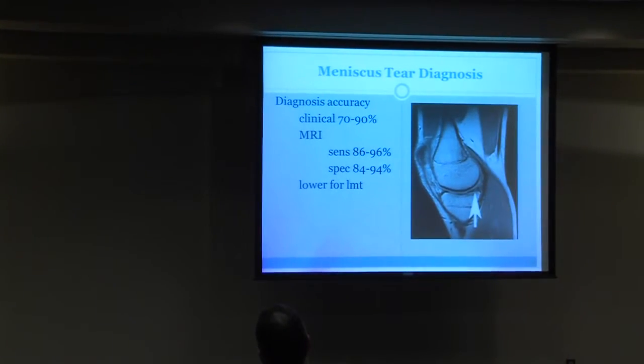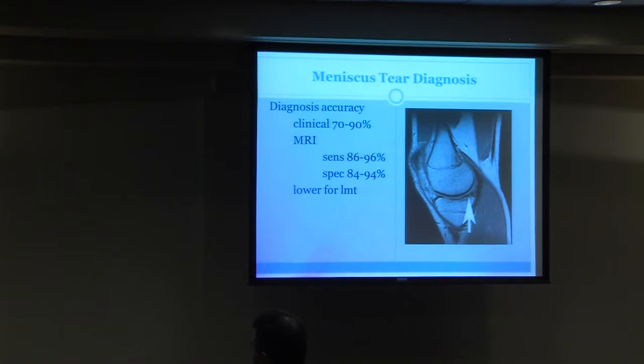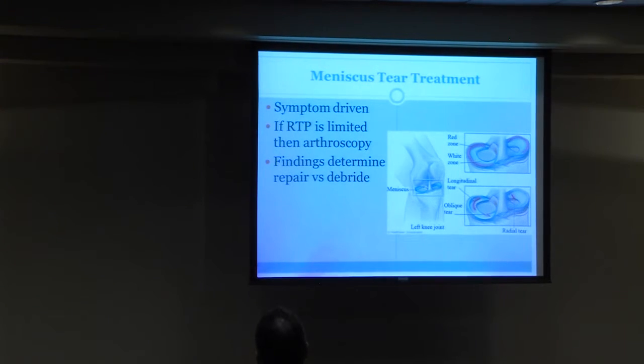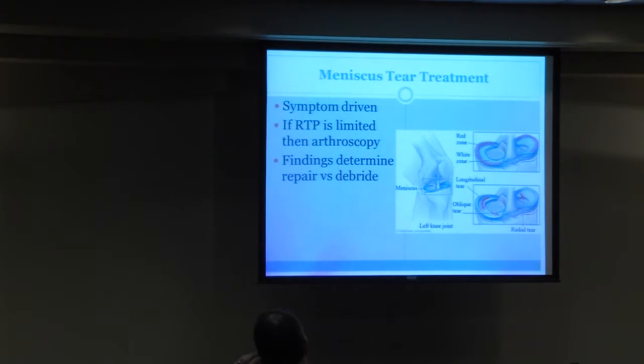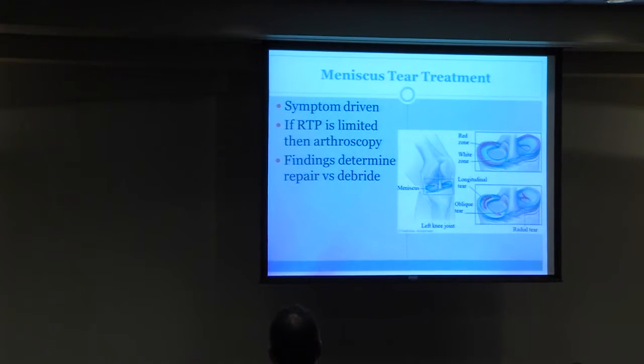Most of the time I do not get an MRI for a meniscus tear. Clinical accuracy is 70 to 90 percent. On an MRI scan of a meniscus tear, you can see a white line running through the meniscus — that's the tear. A normal meniscus is a black triangle, and that white line is indicative of the tear. When I confirm a meniscus tear, I see how symptomatic the patient is and let their symptoms determine if they need to do anything more aggressive.